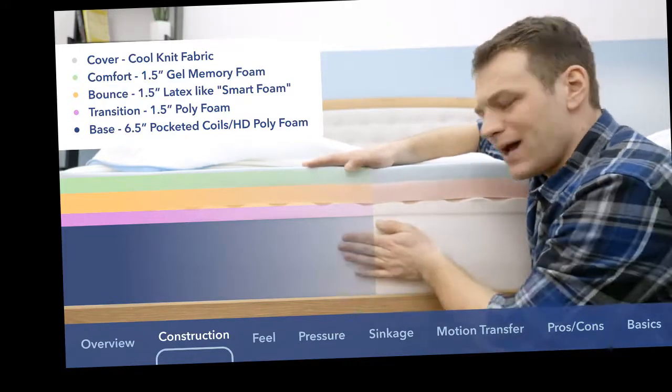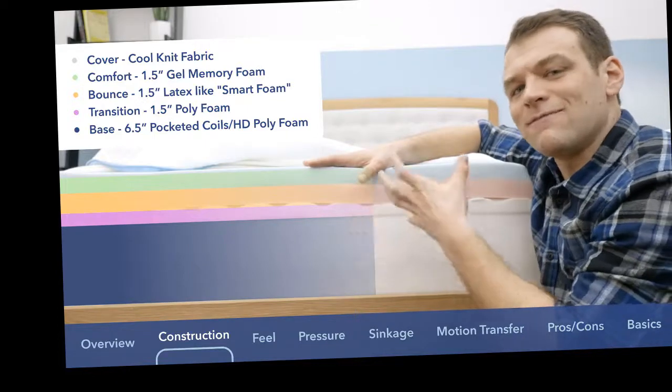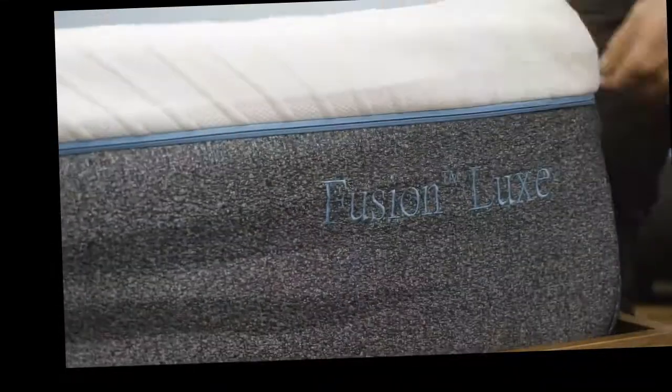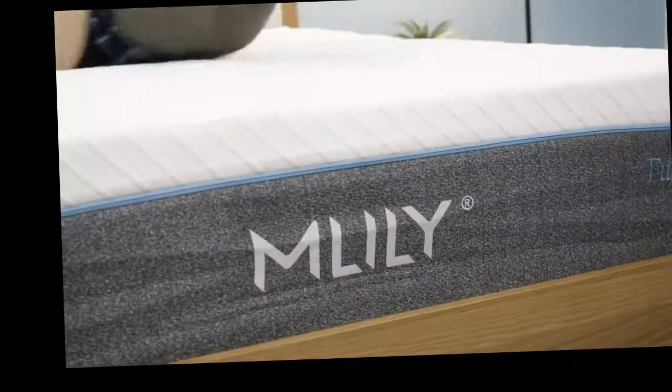At the base of the mattress, there's also more high-density polyfoam, but it doesn't really affect the feel of the mattress overall. It just gives you something for the pocketed coils to sit on. So now that we've seen what makes up the M-Lily Fusion Luxe, let's get an idea of what it actually feels like to lie on top of.